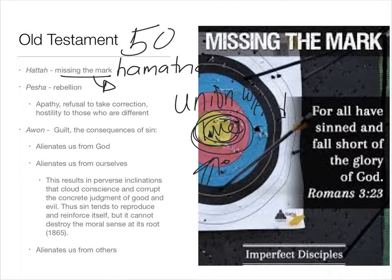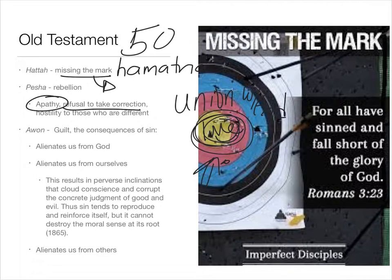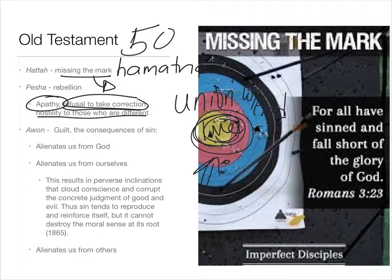Next is pesha, or rebellion. This would be apathy and refusal to take correction. It's expressed by apathy — lack of interest, 'I don't care.' For example, 'I'm not going to help the poor because they're not my problem.' Next would be refusal to take correction — that's like saying, 'Who are you to tell me what to do?' You refuse to realize when you've made a mistake. And finally, hostility toward those who are different. Jesus calls us to love our neighbor, and it would be a rebellion to refuse that commandment.